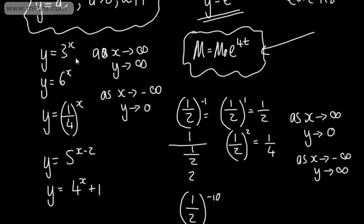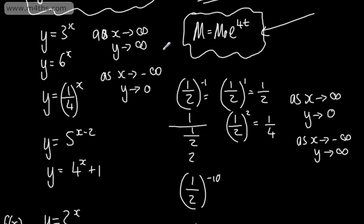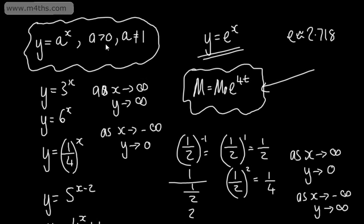For values of the base greater than 1: as x gets large, y gets large; as x gets large in the negative direction, y tends to 0. For values between 0 and 1: as x gets large, y tends to 0; as x gets large in the negative direction, y tends to positive infinity. Understanding the general shape, the key features, and the asymptote is important.